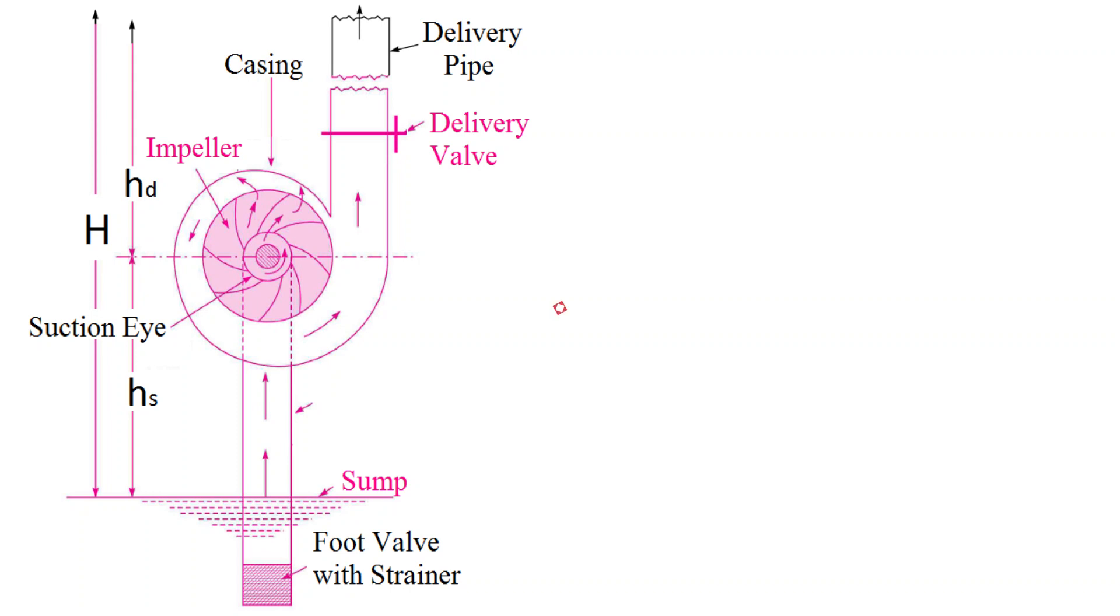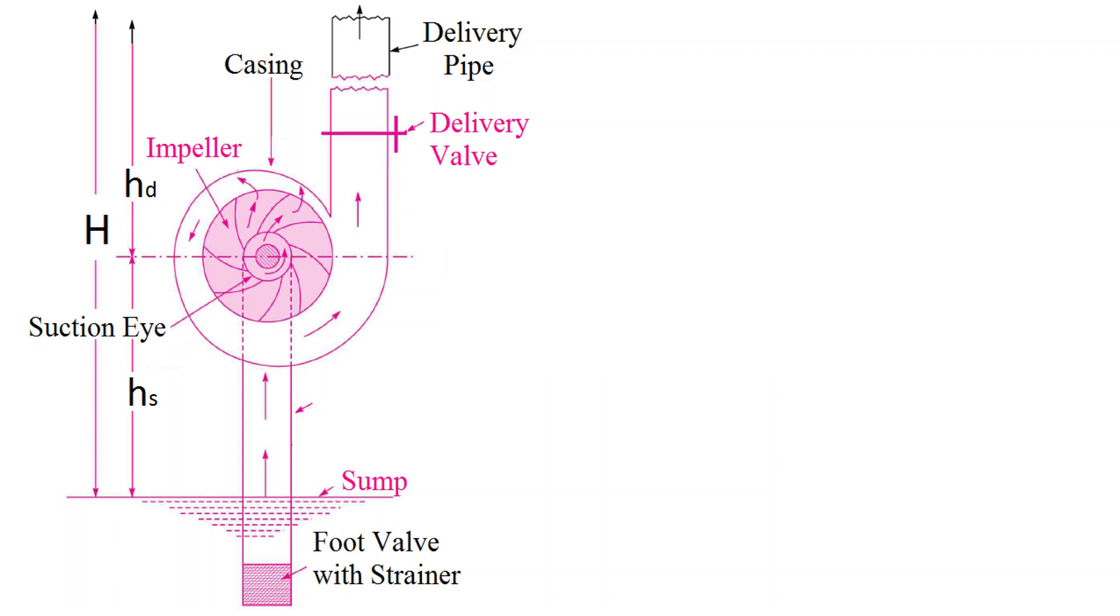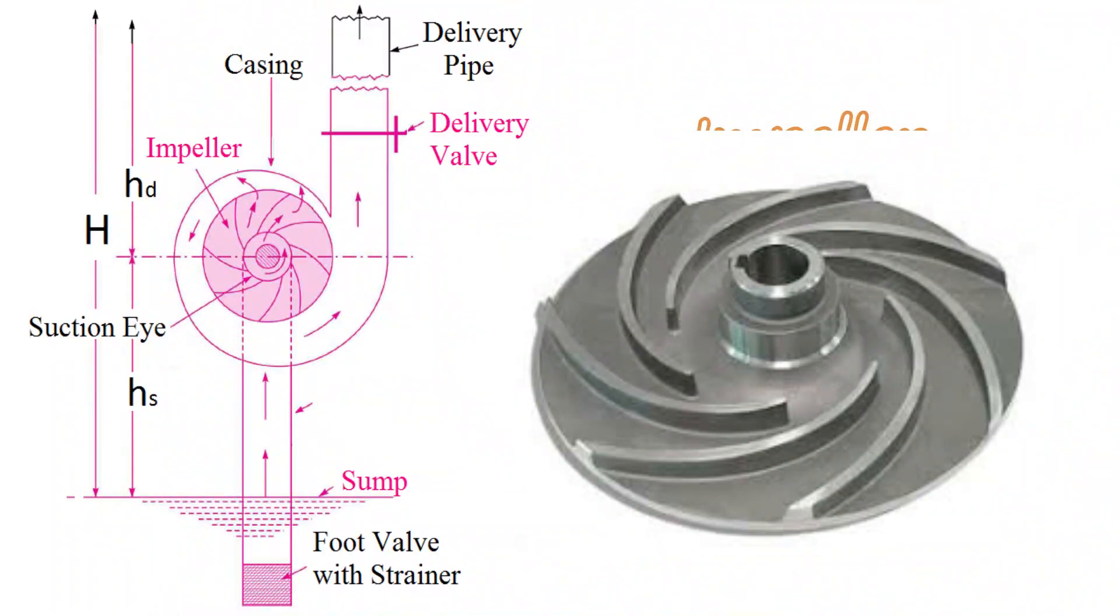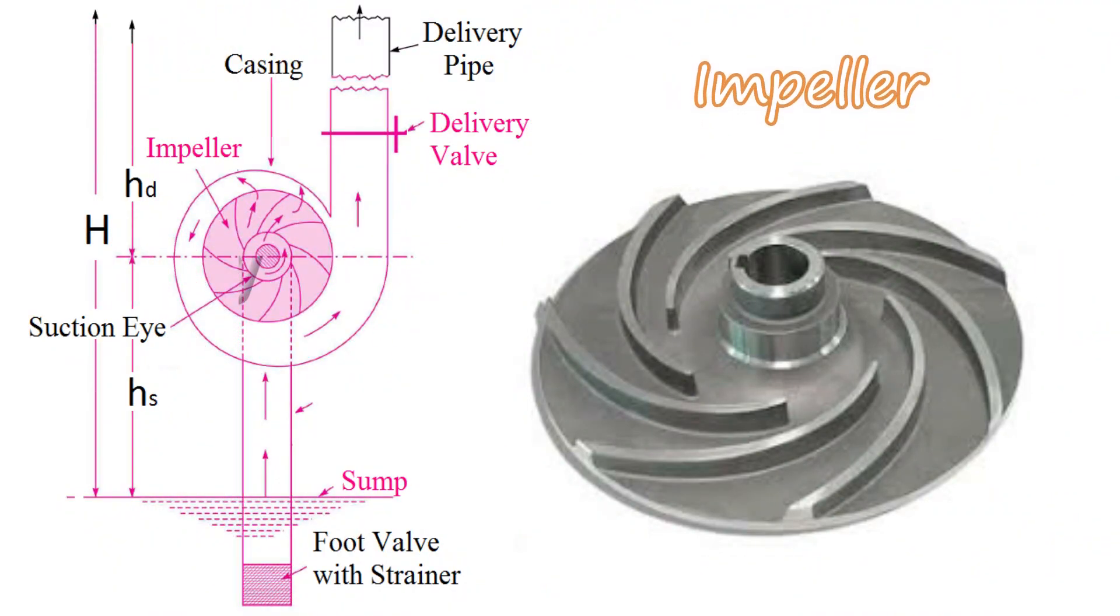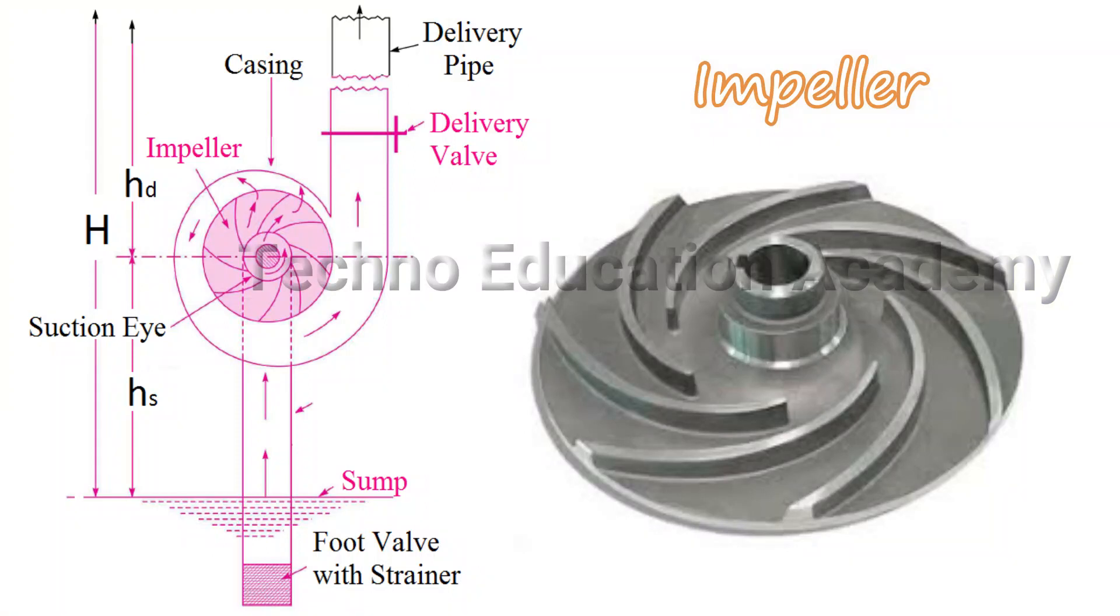Now we will discuss the main parts of centrifugal pump. Then after I will explain working principle of centrifugal pump. So the first component of centrifugal pump is impeller. The rotating part of centrifugal pump is called impeller. It consists of series of backward curved vanes. The impeller is mounted on shaft which is connected to the shaft of an electric motor or internal combustion engine. In generally in agriculture application, the pump is driven by IC engine. The function of the impeller is to convert kinetic energy into pressure energy. How can it convert kinetic energy of liquid into pressure energy that I will explain to you during explanation of working principle of centrifugal pump.